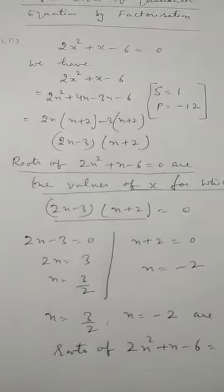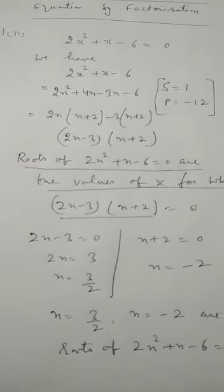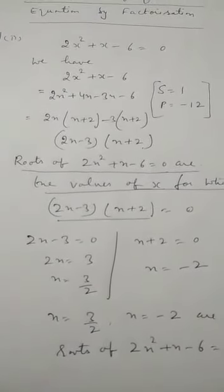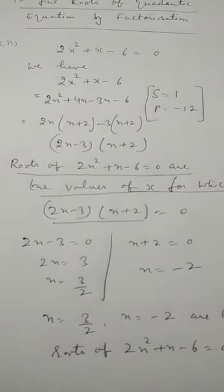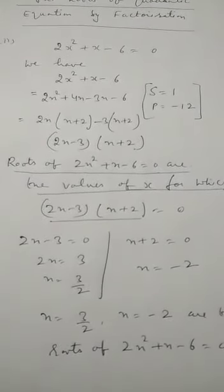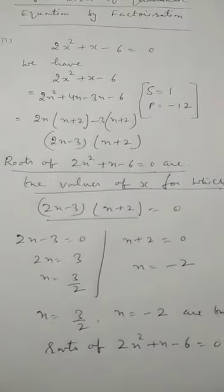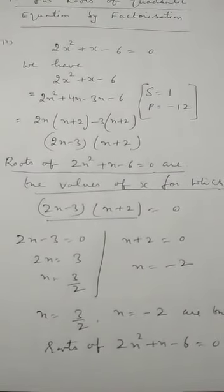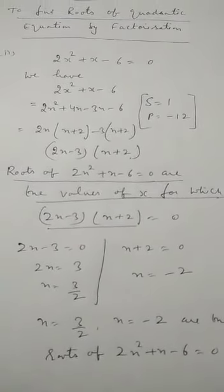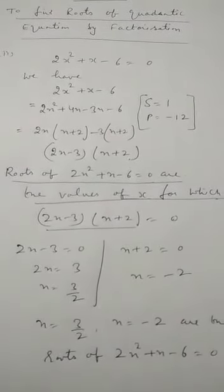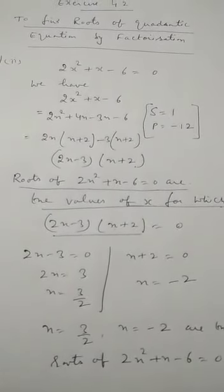Roots of this equation are the values of x for which 2x minus 3 into x plus 2 is equal to 0. We put 2x minus 3 equal to 0, giving x equal to 3 by 2, and x plus 2 equal to 0, giving x equal to minus 2. So we get two roots: 3 by 2 and minus 2, as the roots of the quadratic equation 2x squared plus x minus 6 is equal to 0. In this way, we find roots of a quadratic equation by factorization using splitting the middle term.